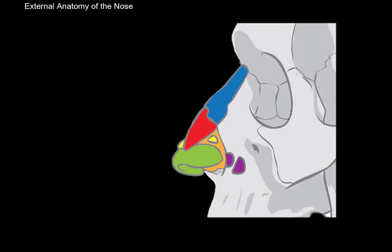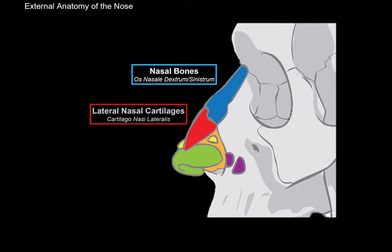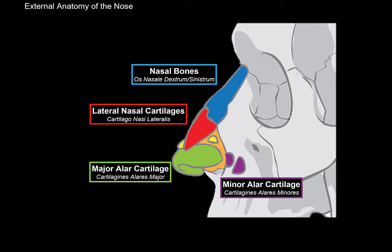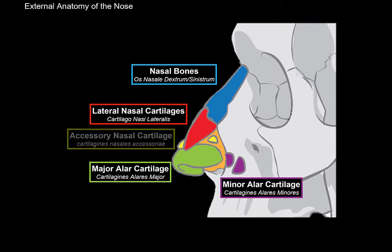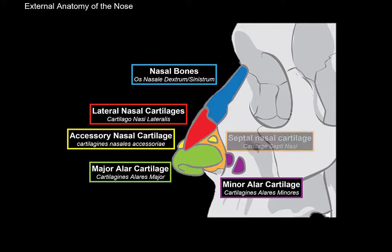If we remove the skin and the muscle layers, we will see the cartilage and bone. The nose is actually built up of bone, cartilage, and fat. The bony part is called the nasal bones — the right and left nasal bones. Under the bones, you'll find the lateral nasal cartilage, then there's the major alar cartilage, and the minor alar cartilage. In between the major alar cartilage and the lateral nasal cartilage, you'll find some accessory nasal cartilage supporting the nose. And straight in the midline, you'll find the septal nasal cartilage.